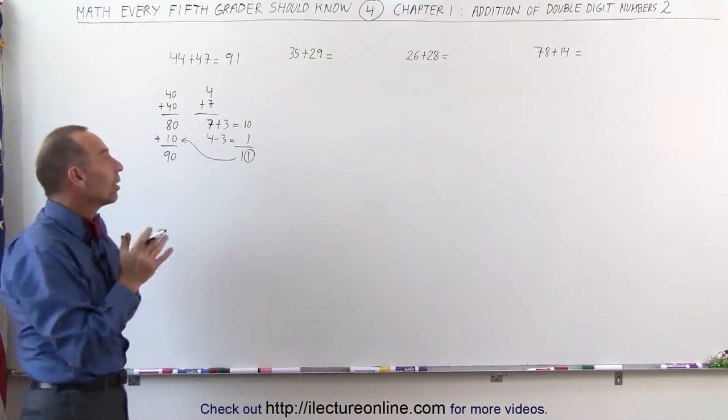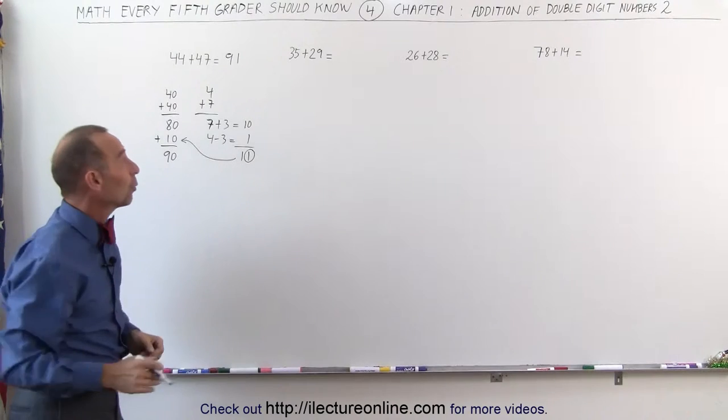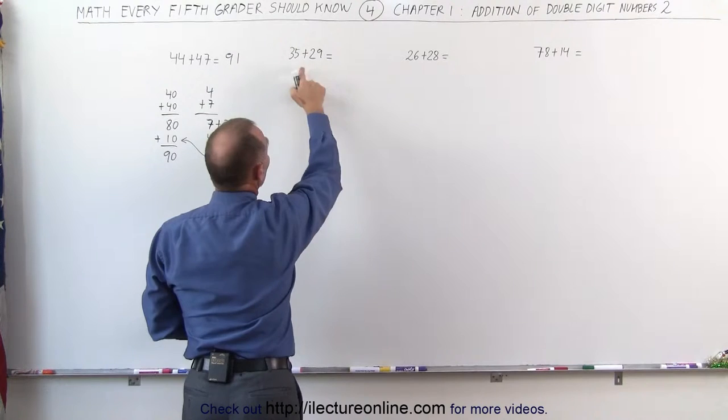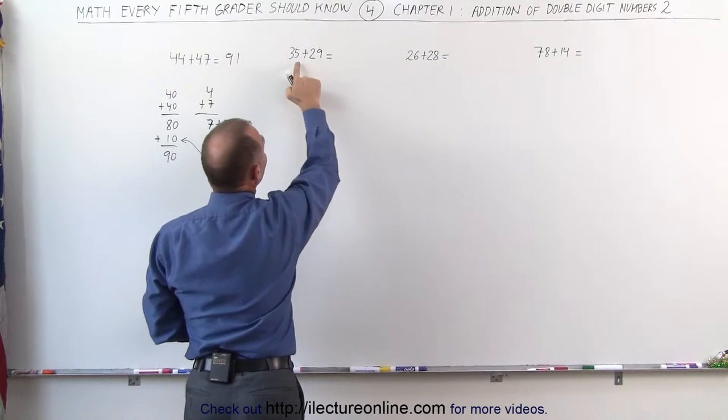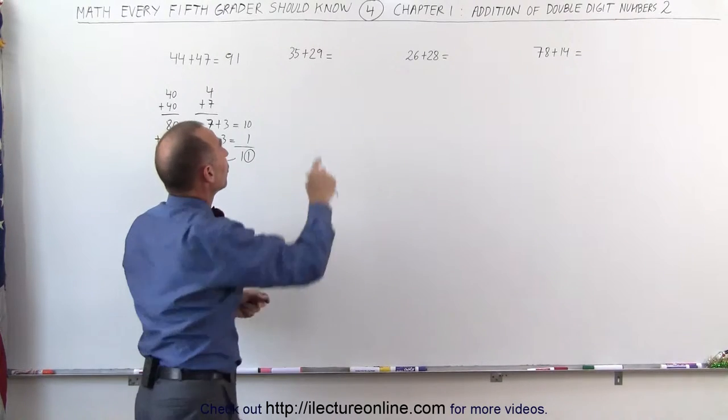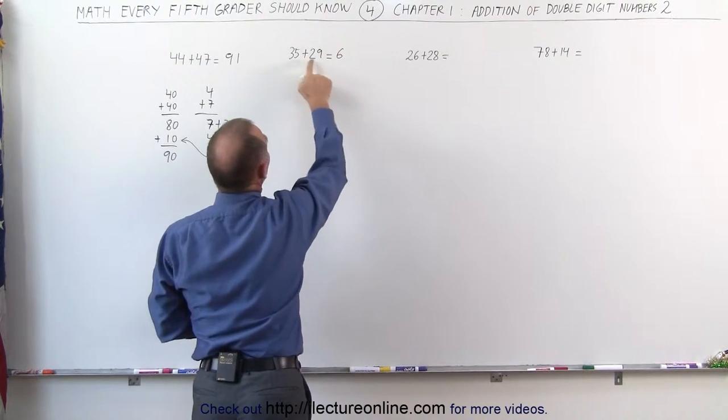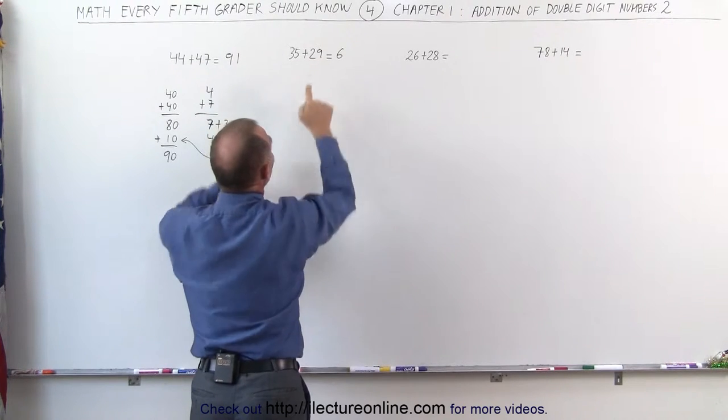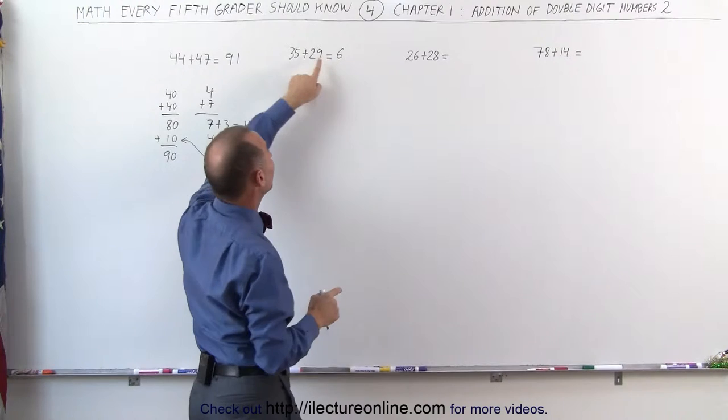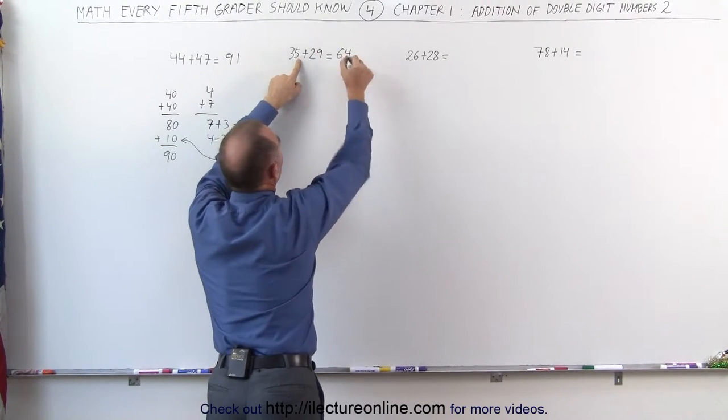So that's kind of the way you want to think about a problem like that. Let's try it again in the next problem. 3 plus 2 is 5, so I would write 50 here. However, the 5 plus 9 is bigger than 10, so I have to add another 10 to that. So 3 plus 2 is 5, plus 1 gives me 6. Now I'll look at the last two numbers, 5 plus 9. I take 1 away from the 5 to make that a 10, I subtract 1 from the 5, that gives me 4, so I put 64 down.